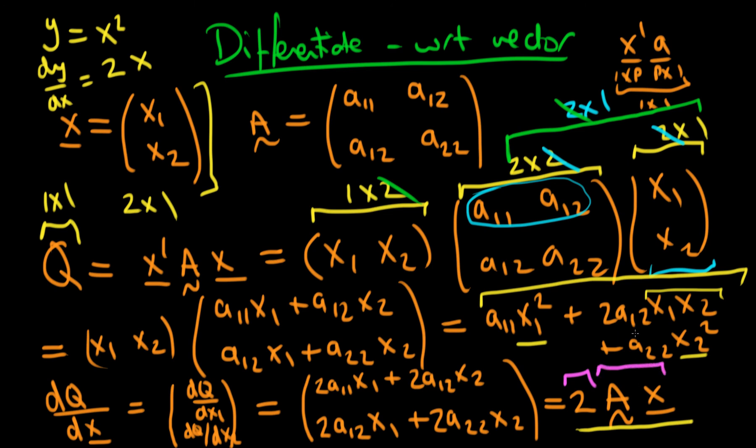So that's a rule for differentiating a quadratic form with respect to the column vector x. If we were differentiating Q with respect to a column vector, then we have to modify our results slightly. And we're just going to talk about that briefly in the next lecture. I'll see you then.